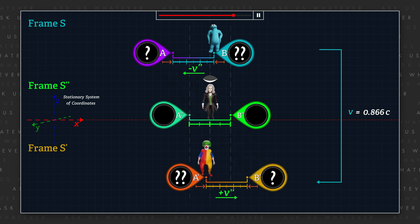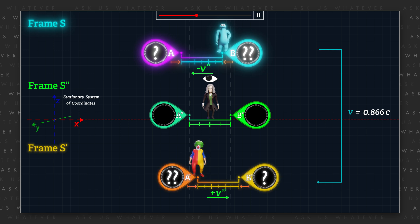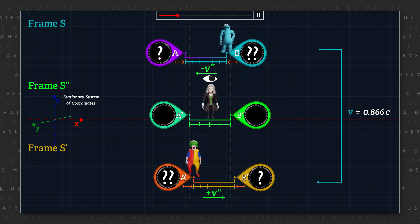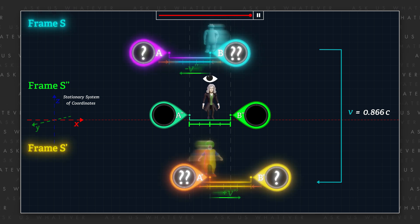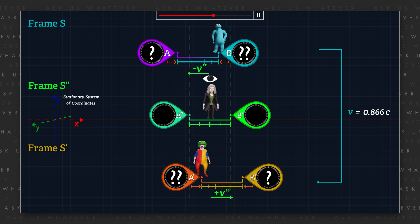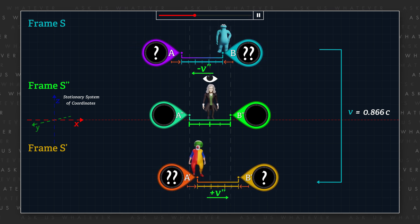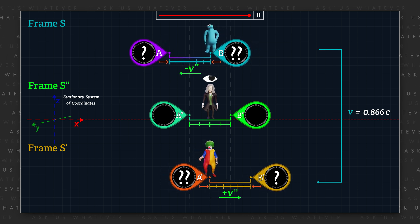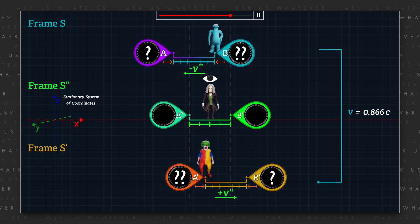With this setup, any reversal of perspective between frames S and S prime should not require a resetting of clock offsets, time dilation, or length contraction. Observers in frames S or S prime might consider their own frame to be either moving or stationary, without requiring any physical changes within their frame or the other moving frame. With this type of symmetry, we can eliminate most of the objections that I raised in episode 7.4.